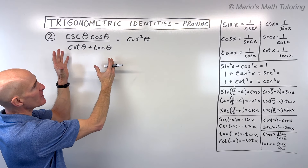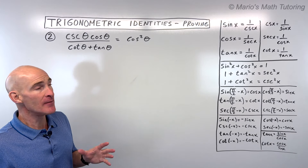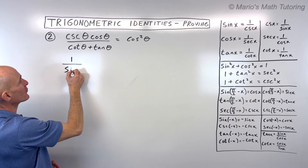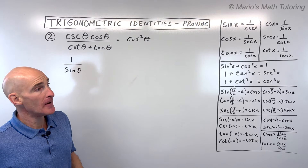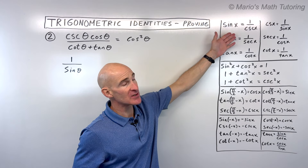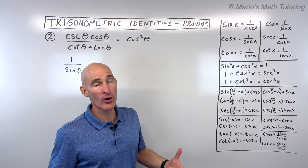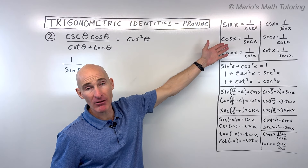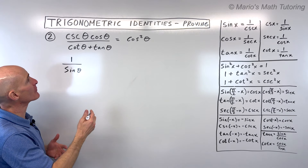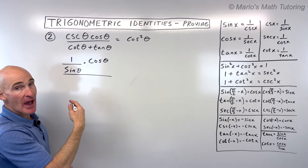For example 2, cosecant of theta is the reciprocal of sine, so 1 over sine theta. For cotangent, I'll write it as cosine over sine. A tip on memorizing: when I was a student, I would write them down maybe 10 times to get that muscle memory. If you're a tactile or visual learner, say them out loud or make flashcards. The more familiar you are with these identities, the more they'll jump out at you. Tangent of theta is sine over cosine, so let's replace that.